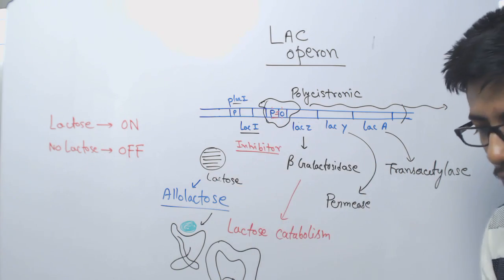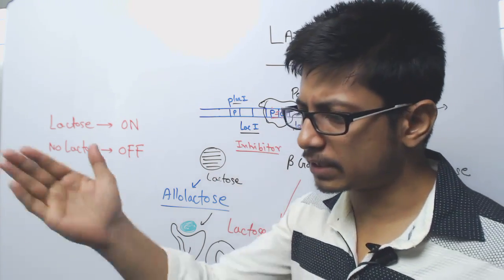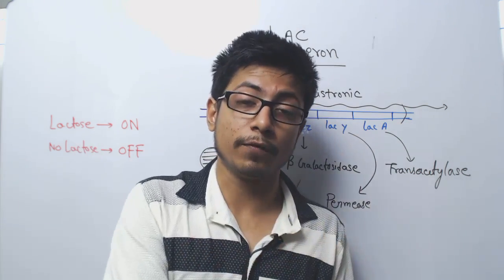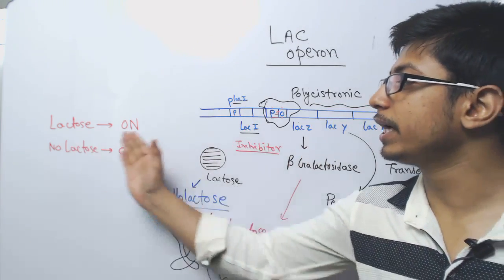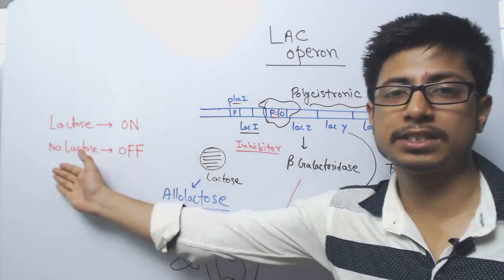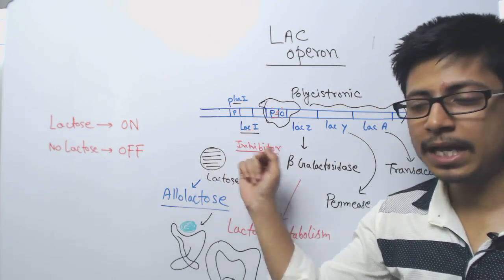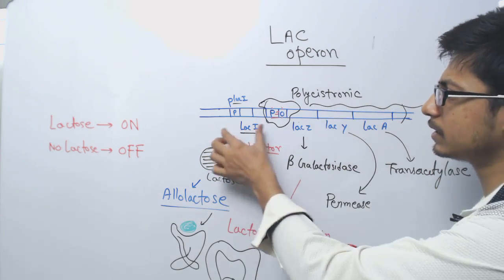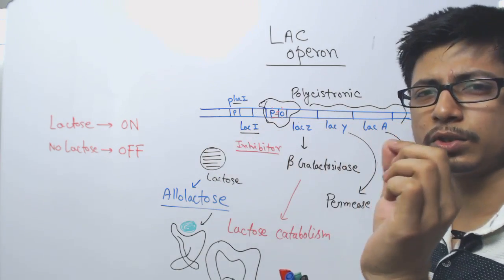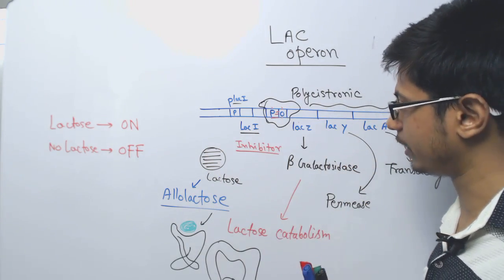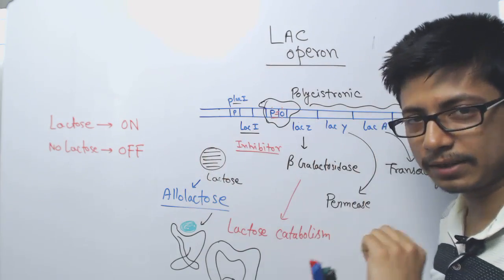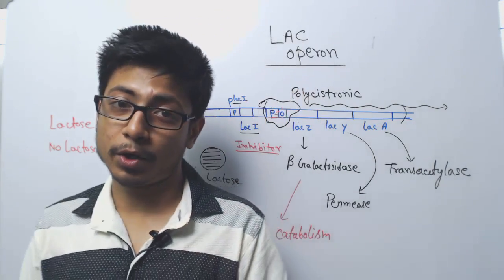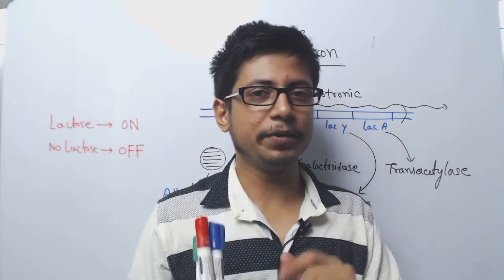Promoter is free, RNA polymerase transcribes, proteins are made, and we can use them to break down lactose. If there is lactose: operon on. No lactose: operon off. In default, it is turned to the off state by the inhibitor. The inhibitor molecules are synthesized constitutively in very low scale throughout the time. This is how the lac operon is turned on and turned off.